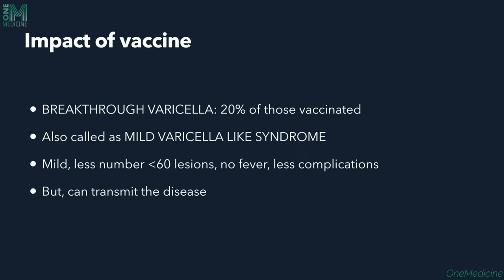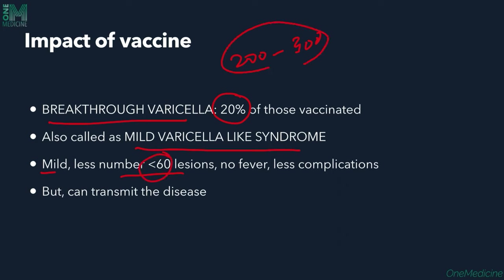Impact of vaccine: Breakthrough Varicella occurs in 20% of vaccinated people. It is also called mild Varicella-like syndrome — a milder disease with less than 60 lesions (compared to the normal 200–300), no fever, and fewer complications. However, vaccinated individuals can still transmit the disease to others.